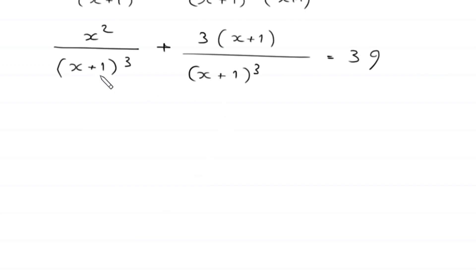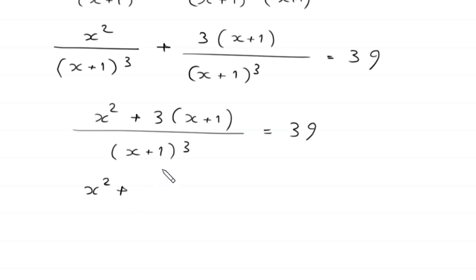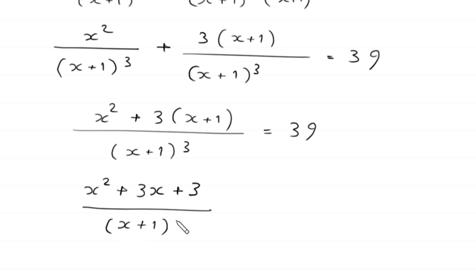Now the LCM of these two denominators is (x+1) whole cubed. So the numerator becomes x squared plus 3 times (x+1), all divided by (x+1) whole cubed, is equal to 39. Expanding gives x squared plus 3x plus 3, divided by (x+1) whole cubed, equal to 39.